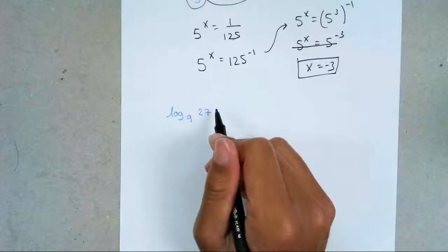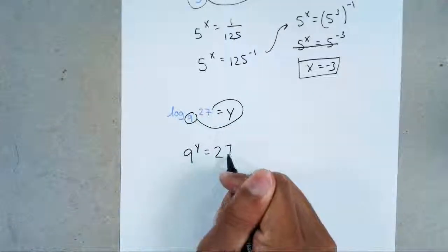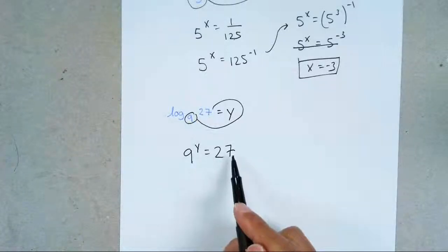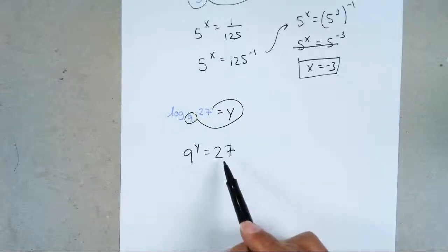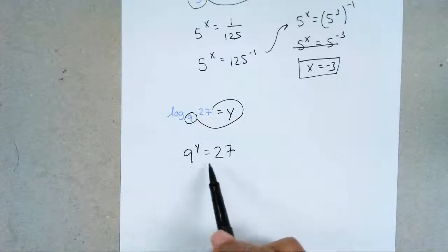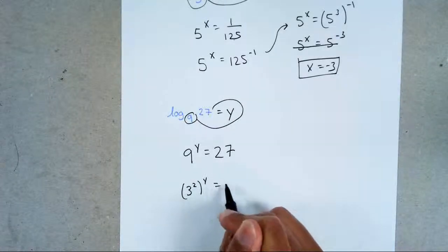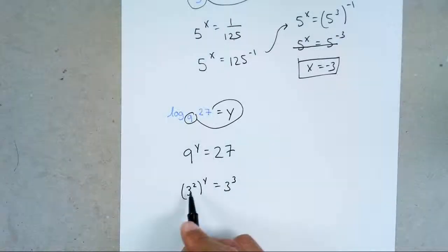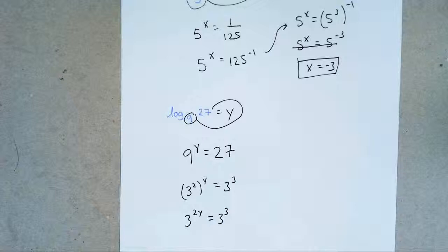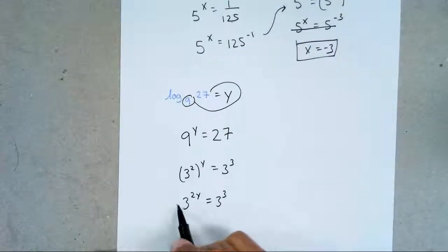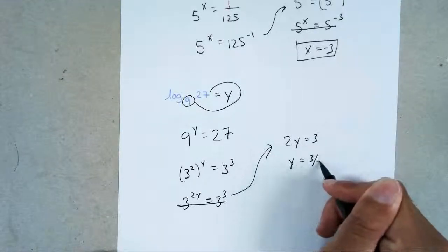The last problem: log base 9 of 27, equal it to y. Circle your base, go around: 9y equals 27. The problem here is I can't turn 27 into a power of 9 — there's no power of 9 that gives me 27. When that happens, you have to rework both numbers. What base do 9 and 27 have in common? Hopefully you said 3. 3 to the 2nd gives you 9, and 3 to the 3rd gives you 27. So you get 3 to the 2y equals 3 to the 3rd. Cancel the bases, and solve: 2y equals 3, divide by 2, so y equals 3 halves — that's your final answer.